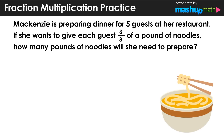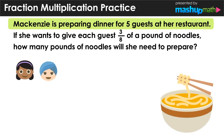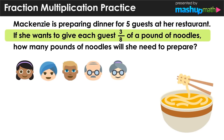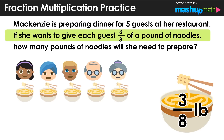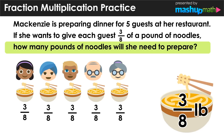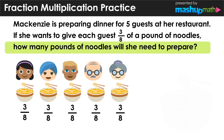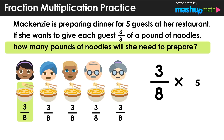Let's go ahead and model this real-world situation. Mackenzie is preparing dinner for five guests at her restaurant, and she wants to give each guest three-eighths of a pound of noodles. So we have five guests, and each one of them is going to receive three-eighths of a pound — that's three over eight — to five different people. We're looking to figure out how many pounds of noodles she will need to prepare. We can model this by taking the fraction three over eight and multiplying it by five total people: three over eight times five.